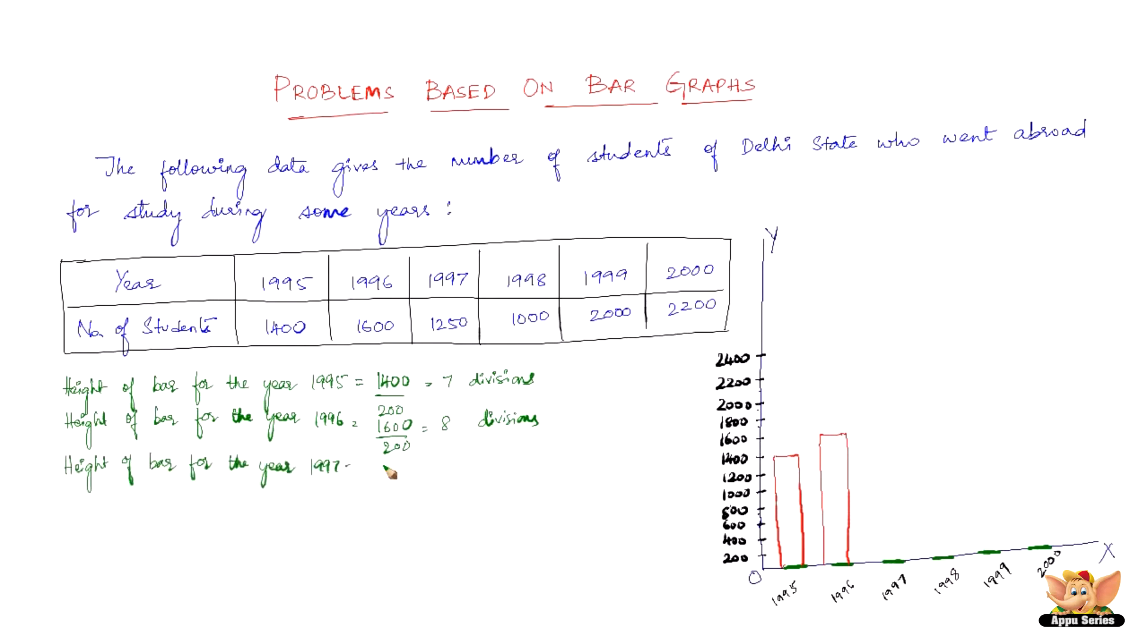Height of the bar for the year 1997 comes up to 6.25 divisions. The sixth division comes here and we need to choose 0.25 between this. The half comes somewhere here, so 0.25 should come in between half and that. So let us now draw for 1997. Now we need to have uniform spaces between the bars. Using a ruler you need to do really accurate in your graph sheets.